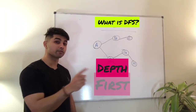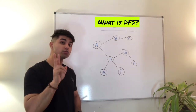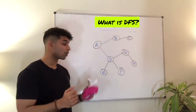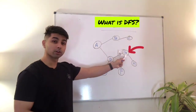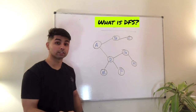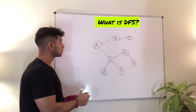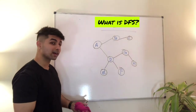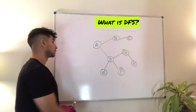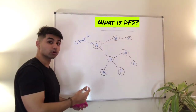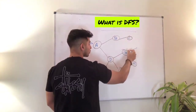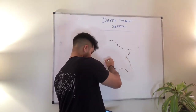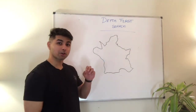DFS stands for depth first search. It is used for two main things: first, traversing a graph or tree; second, finding whether an existing path exists from one point in your graph to another. Given a graph, you can use DFS to traverse the entire graph going from node to node, or you can use it to find the path from a start point to an end point.